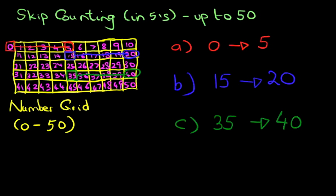So going from 35 to 40 if we are counting in fives. Now I'm just going to look at one more example. But we're not going to use the number grid for this. So if I write down here, D, and this time we've got number 40.